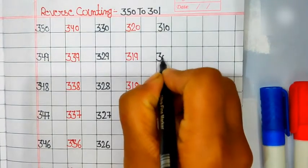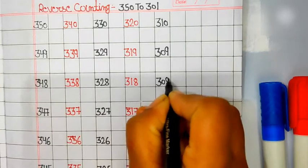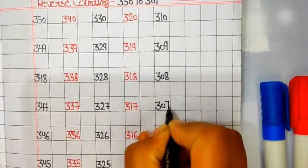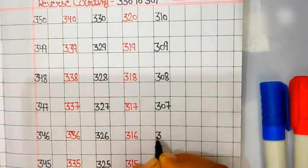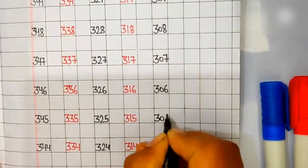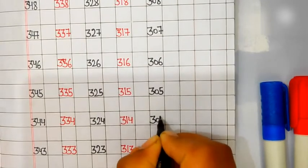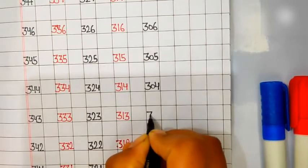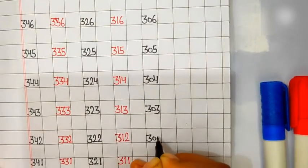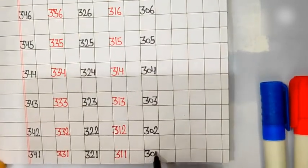309, 308, 307, 306, 305, 304, 303, 302, 301.